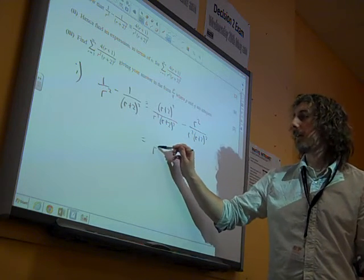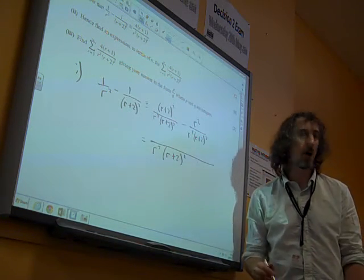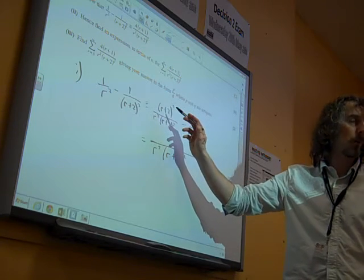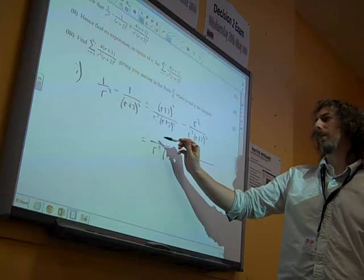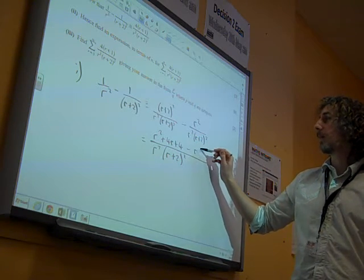So we find ourselves here with that classic potential for a banana skin of r plus 2 all squared. We're not going to write r squared plus 4 because we wouldn't do that at a further math level. It goes to that.